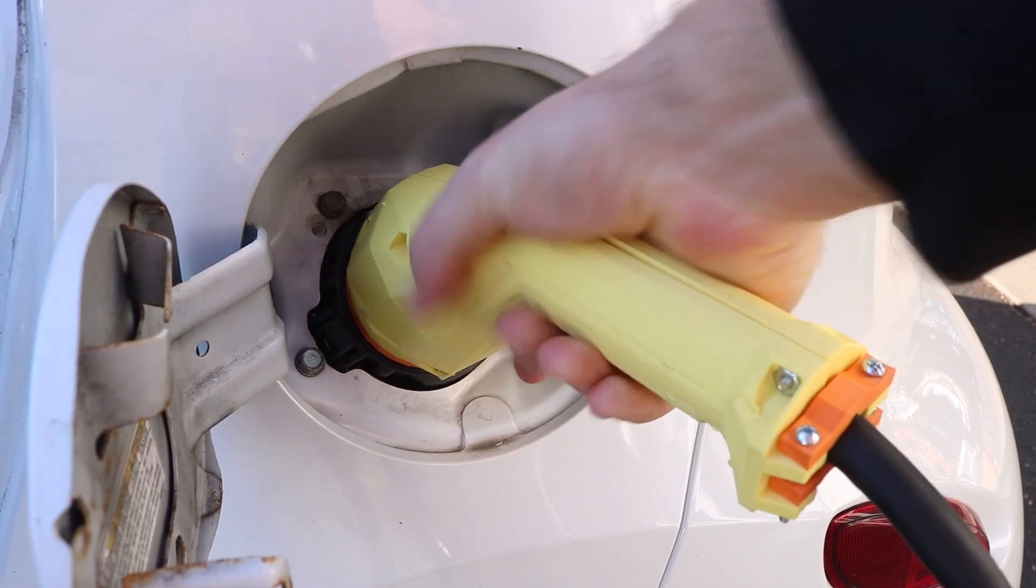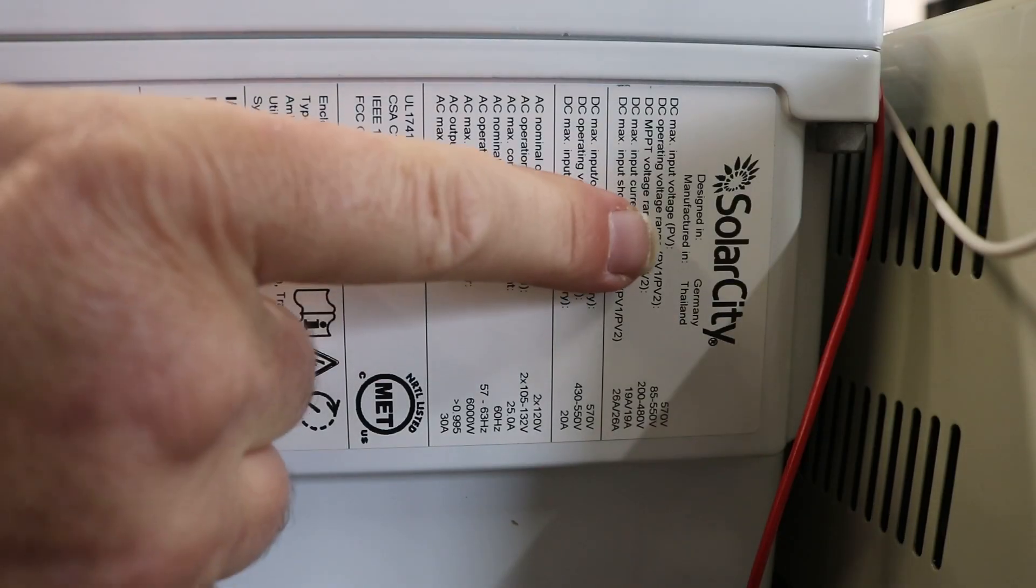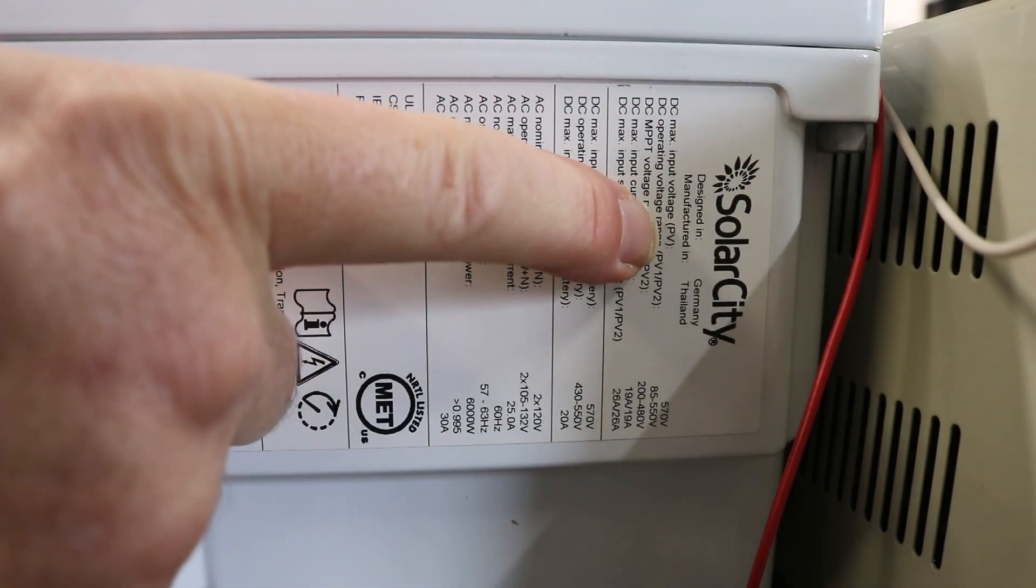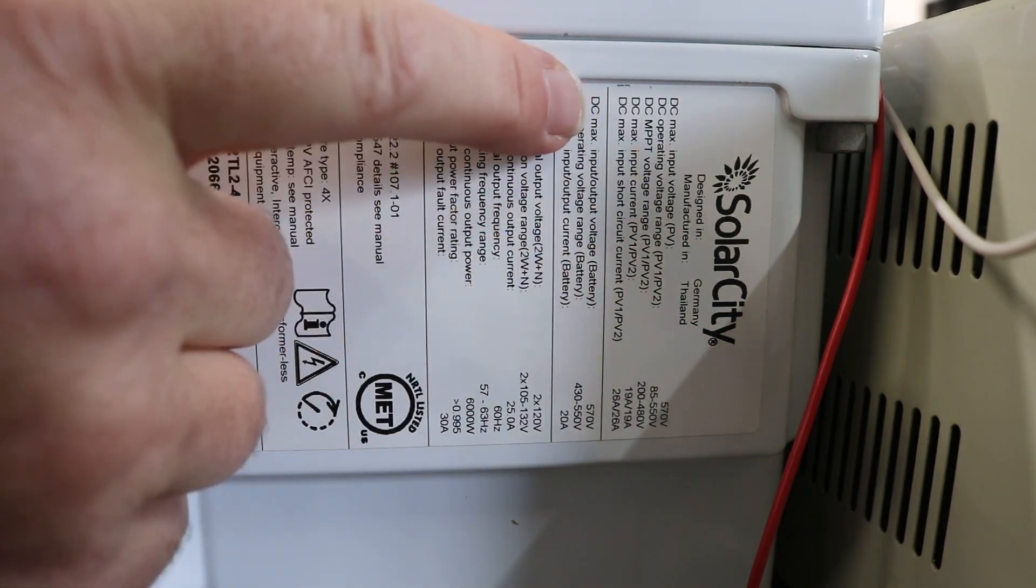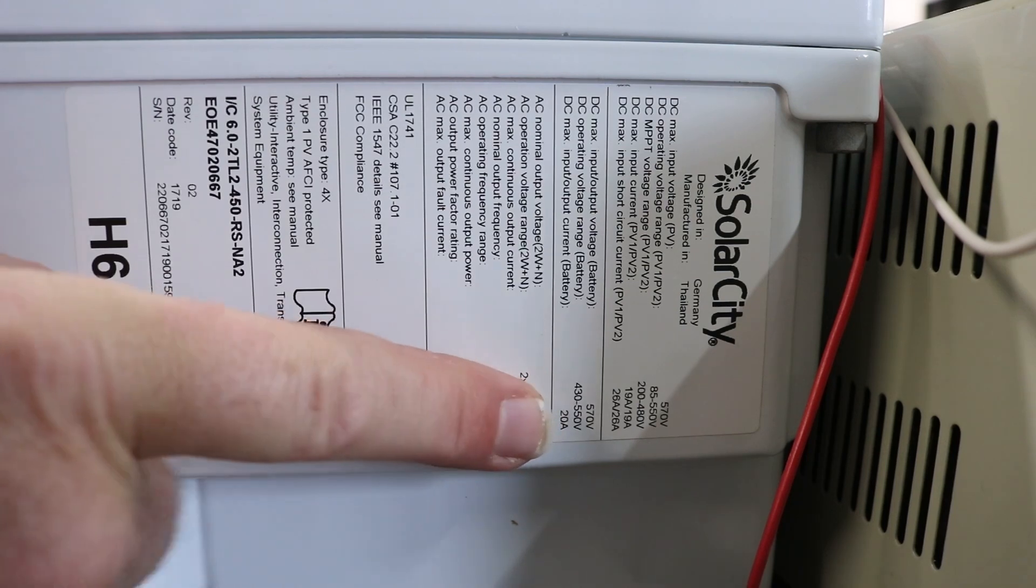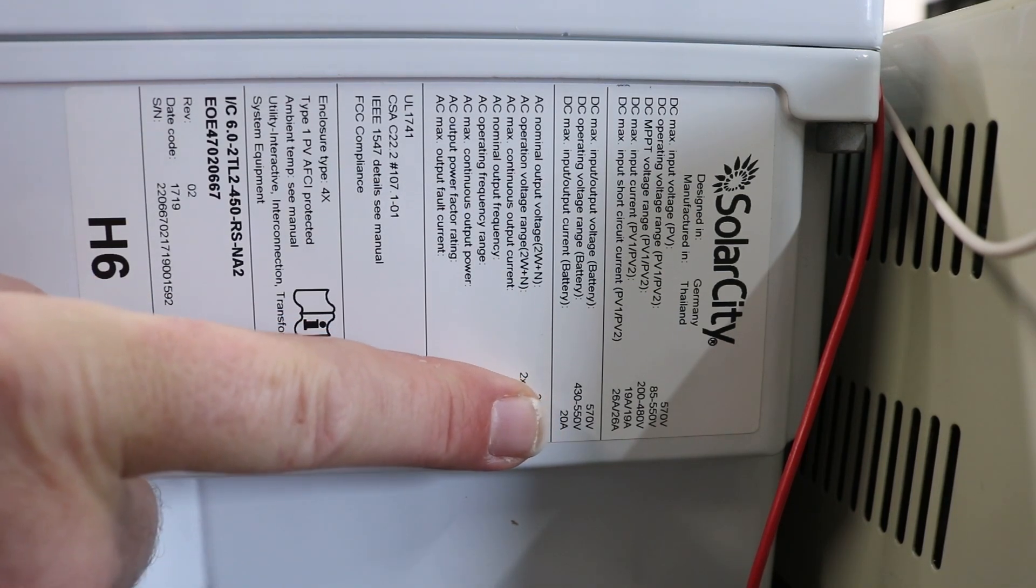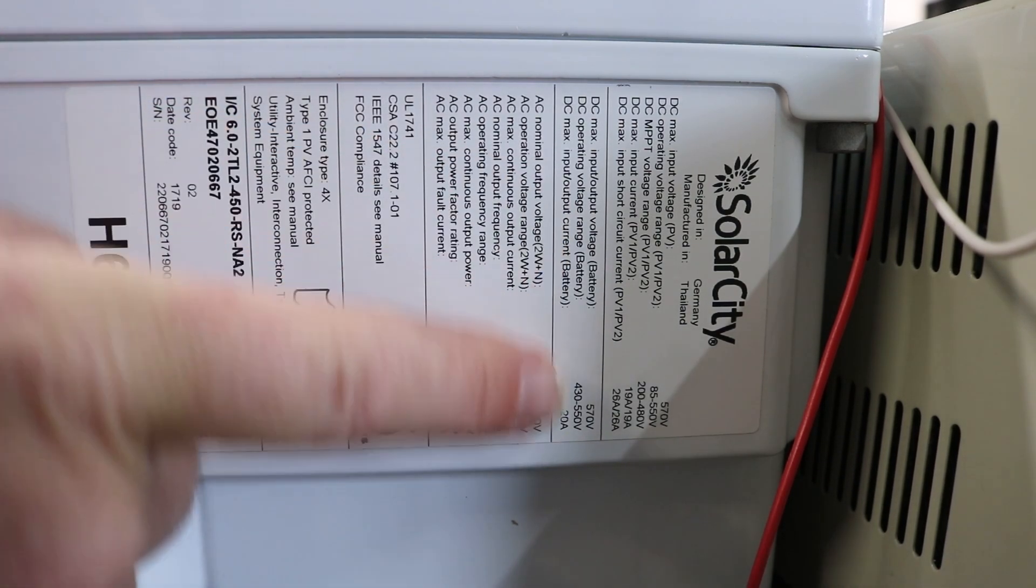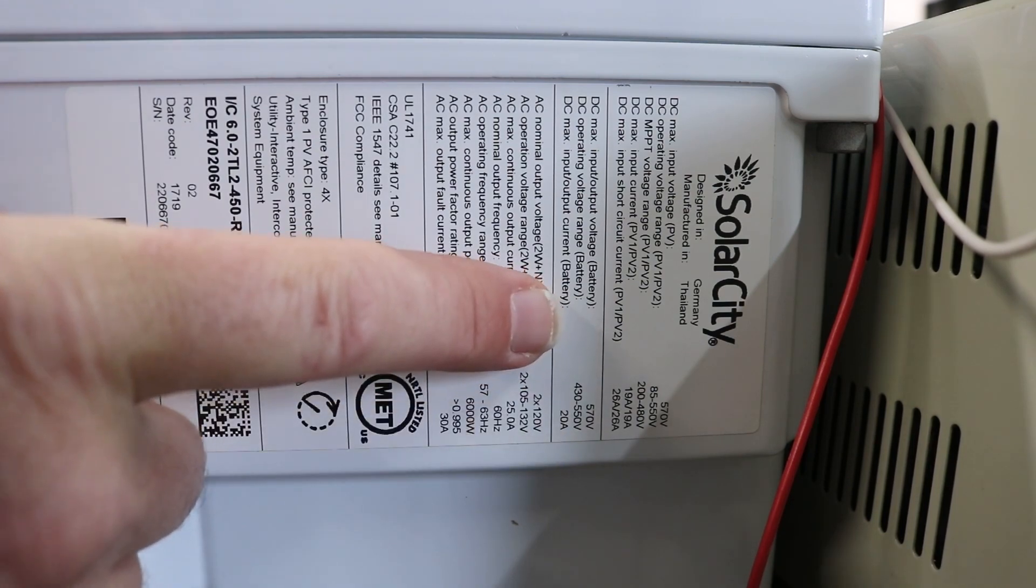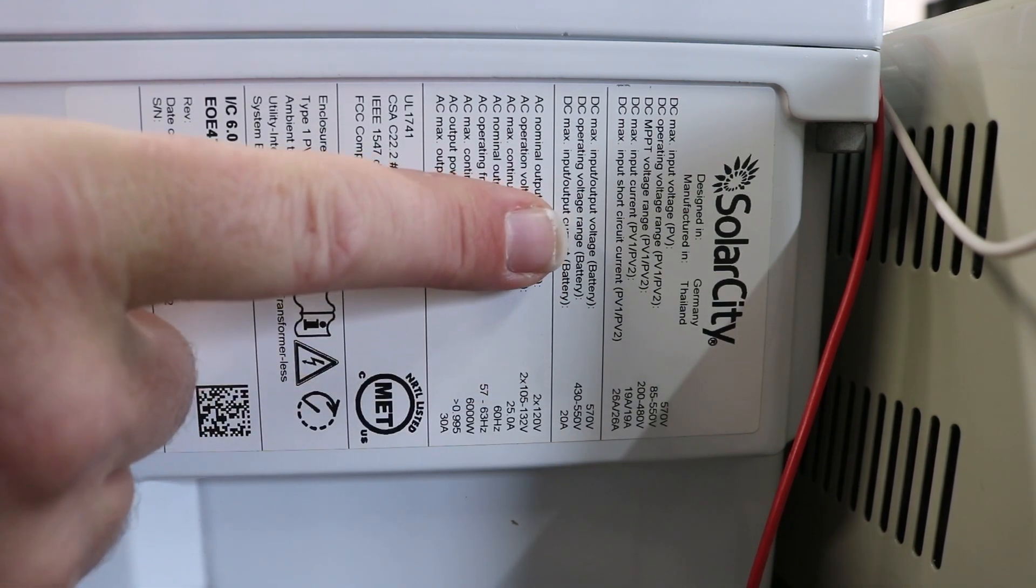Let's take a look at the specs. We can actually see two things going on here. One is it's got some information for the photovoltaic inputs. It also has information for a DC battery, but unfortunately this was designed to work with just one particular battery, an early version of the Tesla Powerwall, and there's some communications and other issues so we are not able to use this battery input.